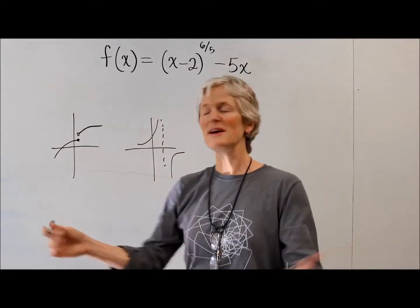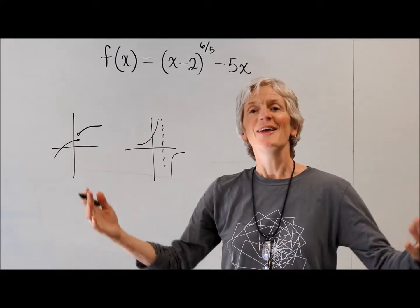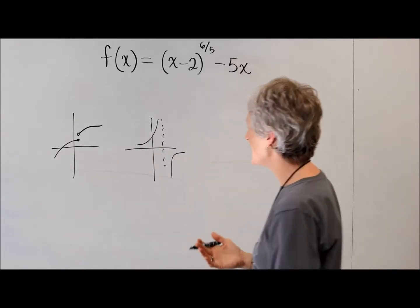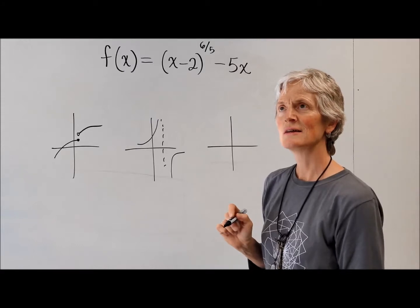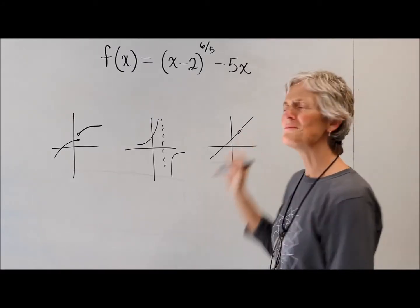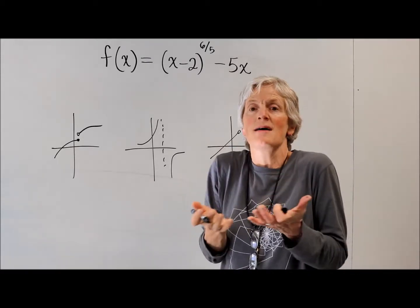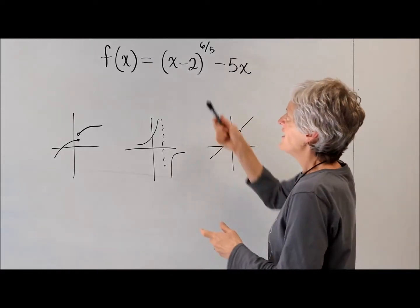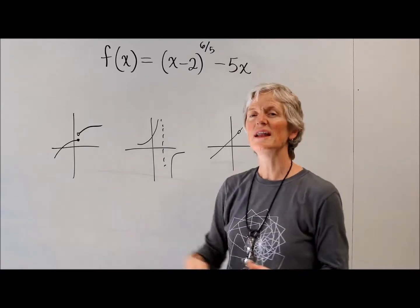I don't think so. What creates vertical asymptotes? You need a zero in the denominator. And what's the other classic? You have a hole in your function — a removable discontinuity. Yes, removable discontinuity, which also comes from a denominator. So this is going to be continuous; it can't possibly fit any of these.